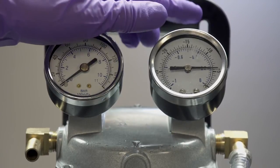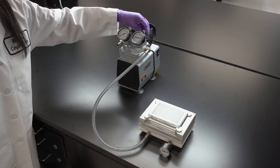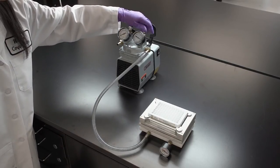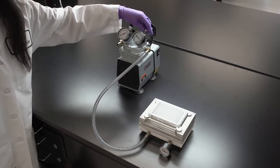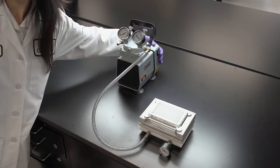You may need to increase vacuum momentarily to ensure all wells are completely drained. Once all the liquid has been drawn through the plate, adjust vacuum to zero and turn off the vacuum pump.